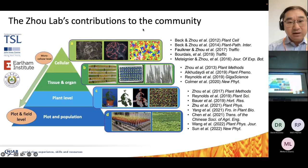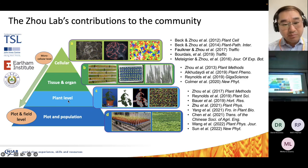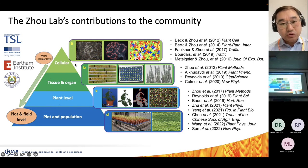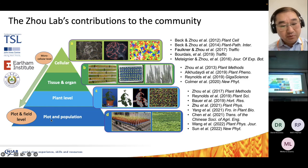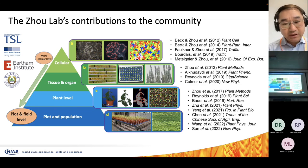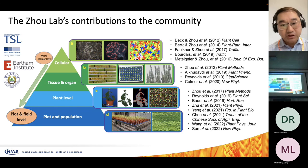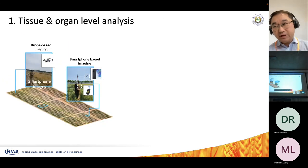My lab is mainly interested in different levels of phenotyping — from cellular phenotyping to tissue, organ, plant level, and population level. At the cellular and tissue level it's about gene testing and understanding how phenotypic features can feed into crop improvement. At the plot and population level we are more interested in utilizing phenotyping to enable genetic mapping, so we can look into molecular markers in the context of global climate change.